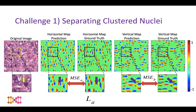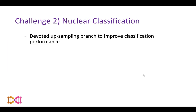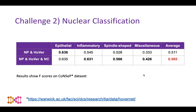For LB, the second loss term, we calculate the gradients of both predictions and ground truth, then compute MSE on those gradients. This helps enforce the straight boundary lines visible in the prediction. For challenge two — differentiating between nucleus types — we have a distinct upsampling branch for classification. An ablation study on the CoNSeP dataset showed that including this separate classification branch significantly increased performance, with quite a large jump in the average across classes.